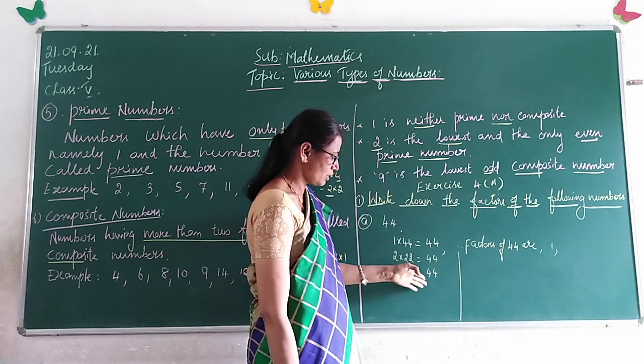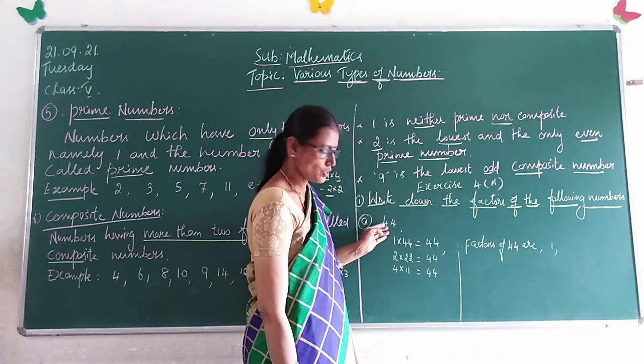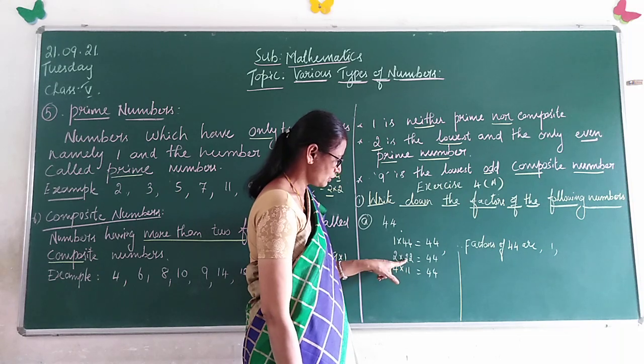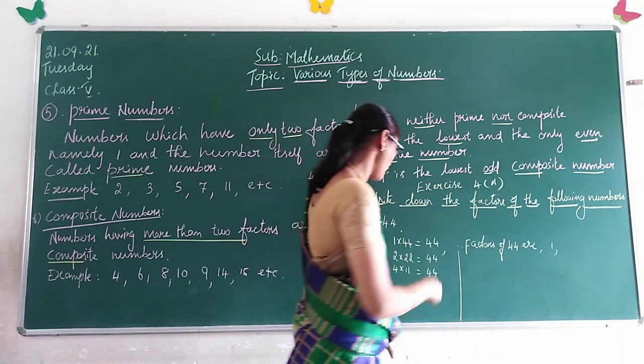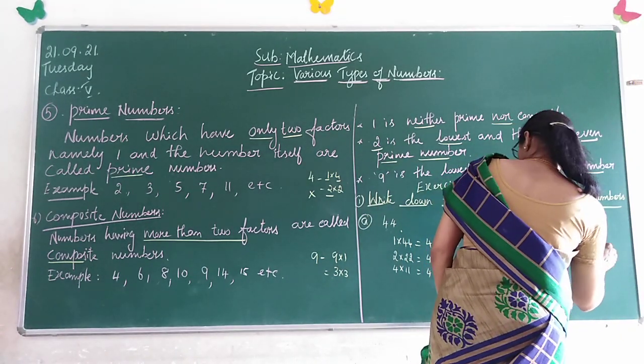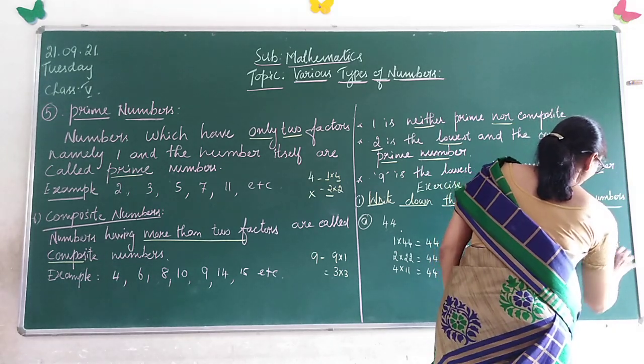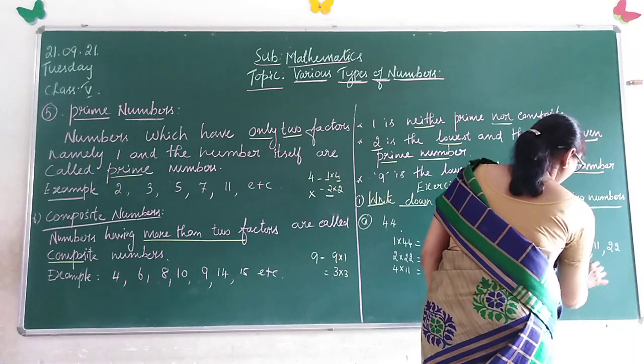So factors of 44 are 1, 2, 4, 11, 22, and 44. These are all the factors of 44.